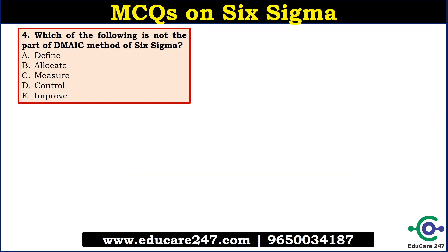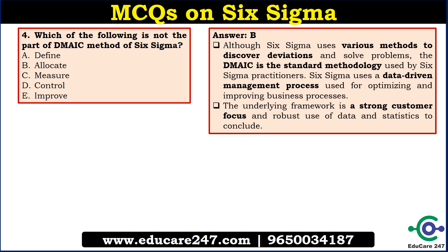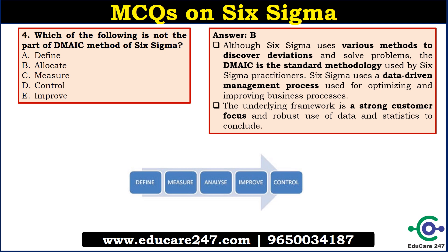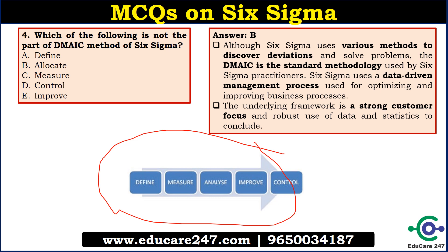The next question is: which of the following is not part of the DMAIC method of Six Sigma? The answer is B — allocate. Six Sigma uses various methods to discover deviation, and one of those is DMAIC — a data-driven management process used for optimizing and improving business processes. DMAIC stands for: D for Define, M for Measure, A for Analyze, I for Improve, and C for Control. This method can be used for a customer-focused approach using data and statistics.